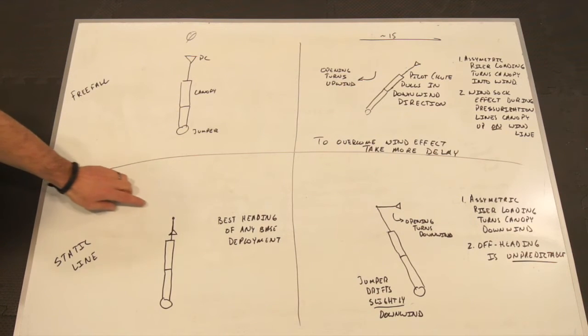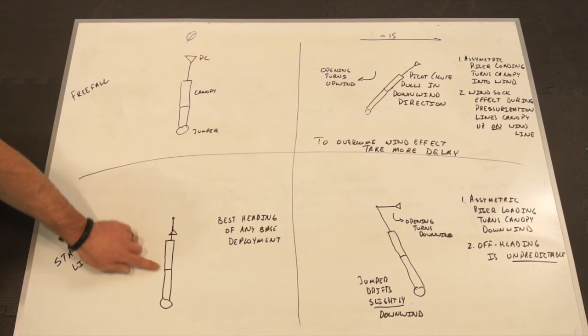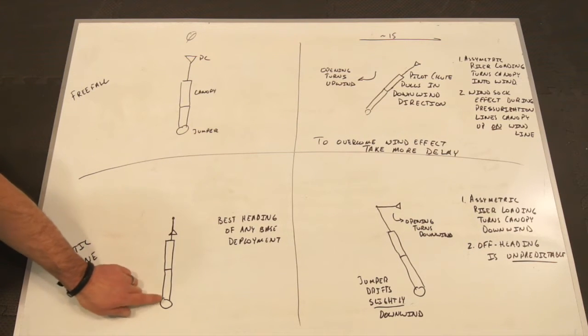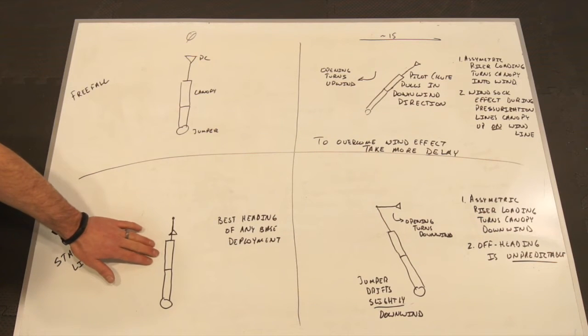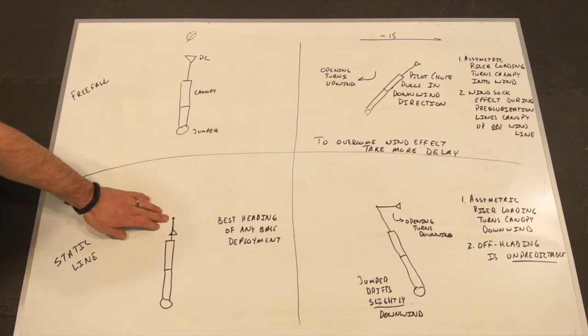On a static line deployment, the static line is fixed here, either on a static line device or in the hand of whoever is holding the pilot chute assist. The pilot chute is just down here below, and we've got a straight bridle, canopy, risers and lines, and the jumper. In general, a static line or PCA in zero wind will have the best opening heading of any base deployment, because there is no pilot chute motion, and the jumper is directly below the extraction point. It's important when doing these jumps to place the attachment point directly between the risers, so that you load them at the same time.